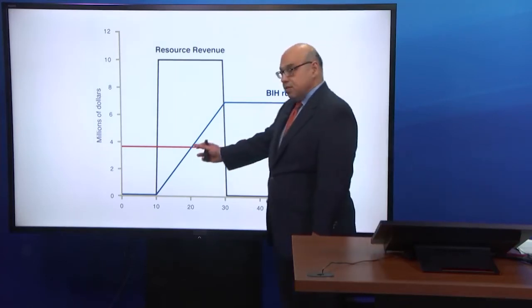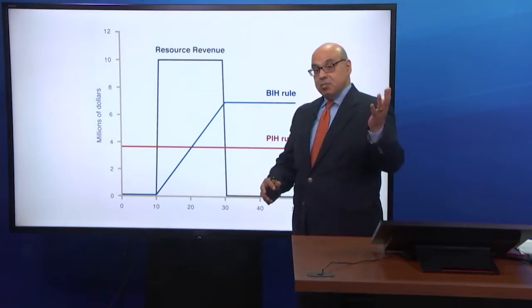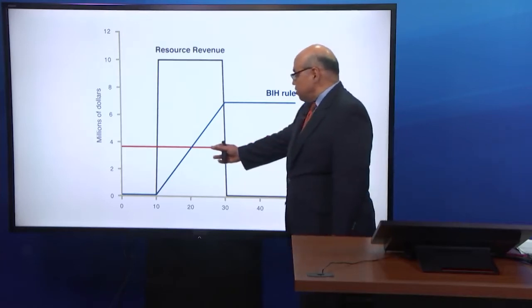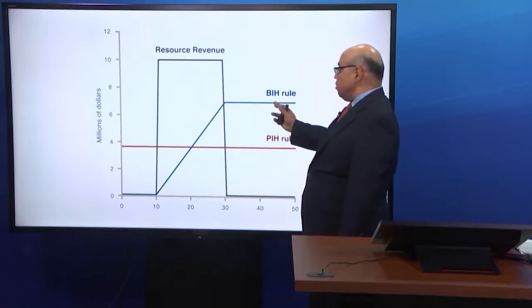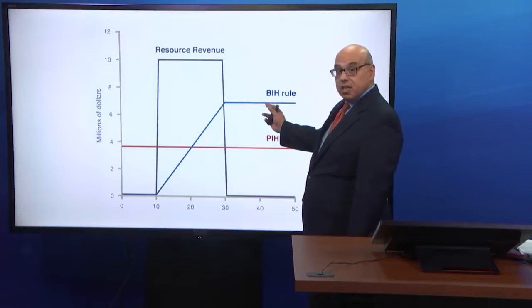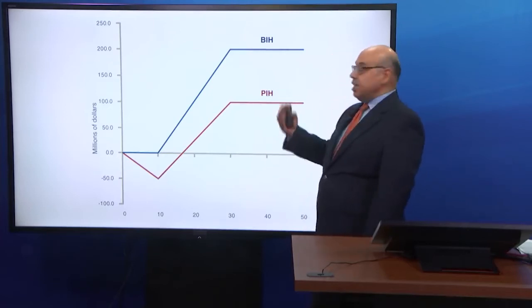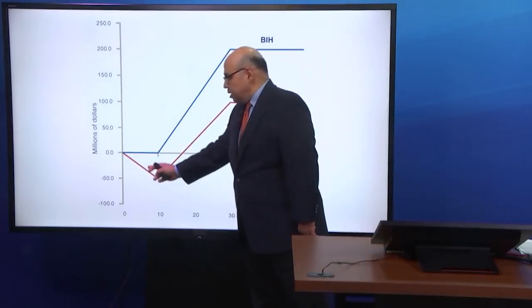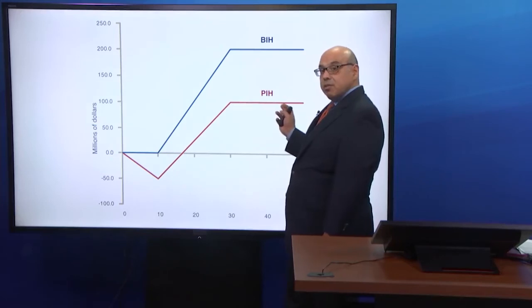BIH is very conservative. It restricts borrowing because spending is only a function of past accumulated savings, just like in a household — you cannot go beyond that. Under PIH, because you have a constant consumption path, consumption or spending becomes lower than under BIH. Looking at the comparison of asset holdings in this chart, you can see the implication very clearly. Under PIH, we already covered this path — you become a net borrower early on and gradually build up your assets, becoming a net creditor until you hit the permanent income hypothesis mark.